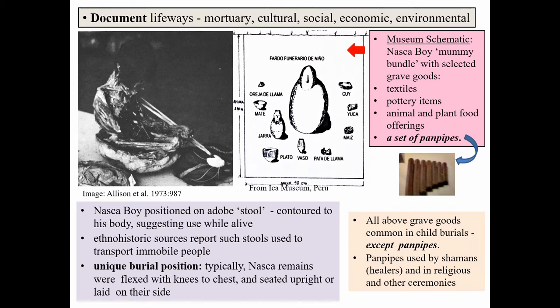There are two special features of the boy's mortuary treatment. The most significant is his position on the stool — it was shaped to his body, suggesting he used it during life. This fits with ethnohistoric reports that such stools were used to transport people unable to walk. In typical Nazca burials, bodies are flexed knees to chest and positioned sitting or on their side; no other interment with this feature is recorded, making this burial unique. The second unusual feature is the inclusion of panpipes among the grave goods. Panpipes are associated with shamans, ceremonies, and rituals, and there is no other known case of their inclusion in a child's burial.